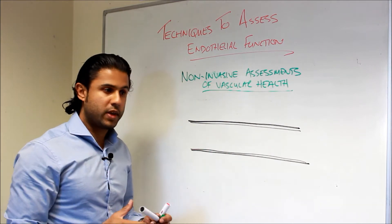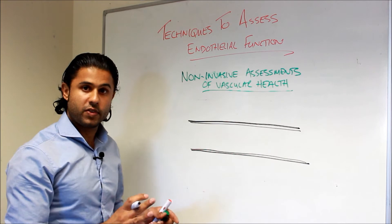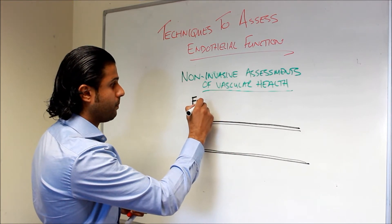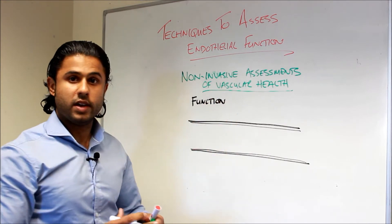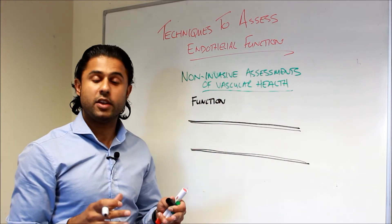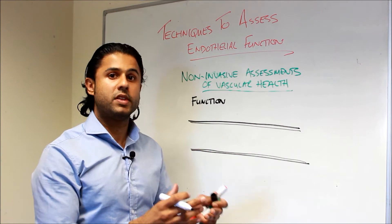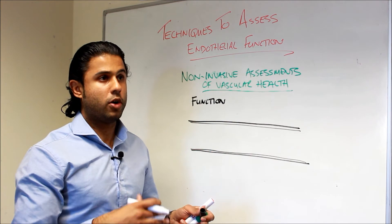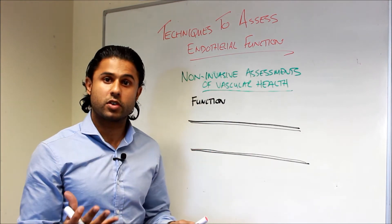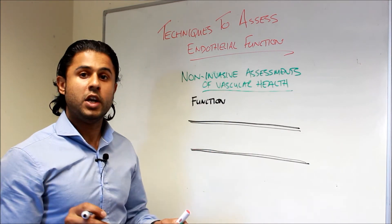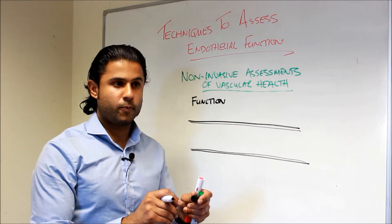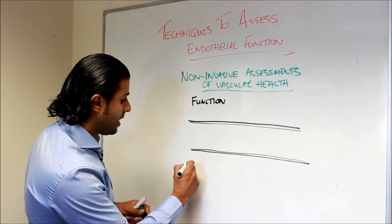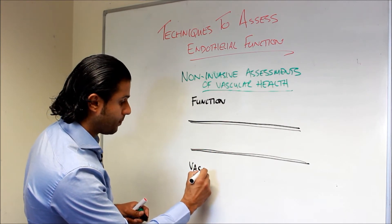The first thing that we need to do when we're looking at an artery is we want to be able to see if the artery dilates properly. So we want to look at function, we want to look at dilation, which automatically means we must look at the activity of nitric oxide. Now, nitric oxide activity or bioavailability cannot be measured directly because nitric oxide has a very short half-life. So we need to create techniques which can stimulate the release of nitric oxide so that we can measure vasodilation.